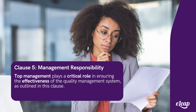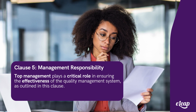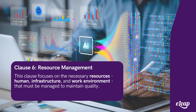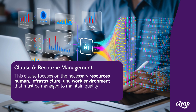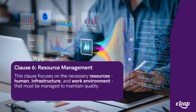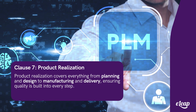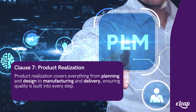Management responsibility — top management plays a critical role in ensuring the effectiveness of the quality management system, as outlined in this clause. Resource management focuses on the necessary resources — human, infrastructure, and work environment — that must be managed to maintain quality. Product realization covers everything from planning and design to manufacturing and delivery, ensuring quality is built into every step.